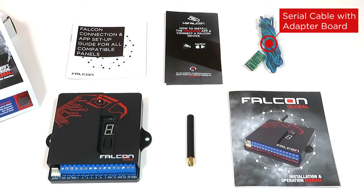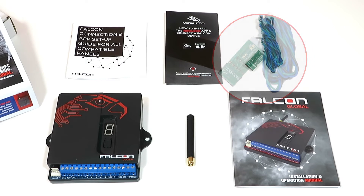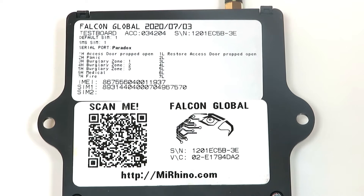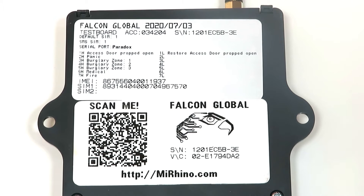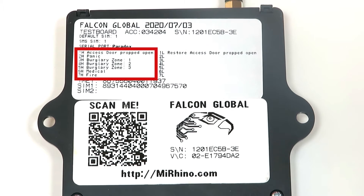For this demo we have a serial cable with a Texacom adapter board. At the back of the Falcon you will see two labels. The top one gives you information about the Communicator such as the account code, the default serial port format and the default hardwire input settings.